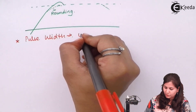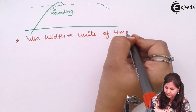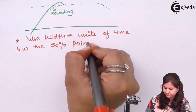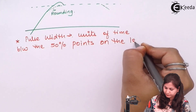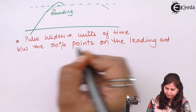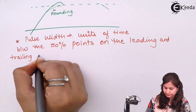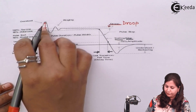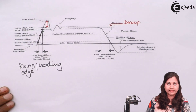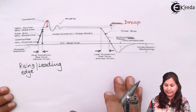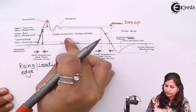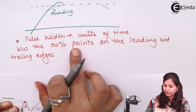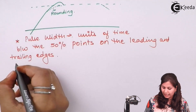Pulse width is measured in units of time and it is the time between the 50 percent points on the leading and the trailing edges. The time period between the 50 percent point on the leading edge and the 50 percent point on the trailing edge is called the pulse duration or pulse width.